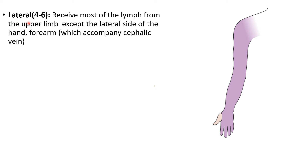The lateral group, approximately 4 to 6 in number, receives most of the lymph from the upper limb, except the area over the thumb and along the lateral aspect of the forearm. Lymph from the thumb and lateral forearm — sometimes including the arm — passes along the cephalic vein and drains directly into the apical group of lymph nodes.